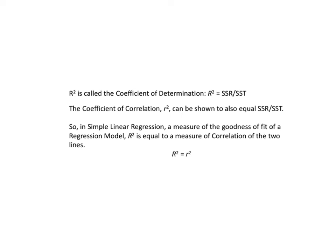Uppercase R² is called the coefficient of determination. R² equals SSR divided by SST. The coefficient of correlation, lowercase r², can be shown to also equal SSR divided by SST. So in simple linear regression, a measure of the goodness of fit of a regression model is equal to a measure of correlation of the two lines.